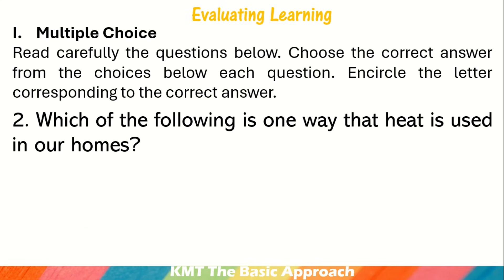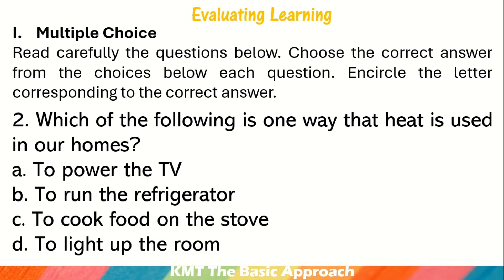Number 2: Which of the following is one way that heat is used in our homes? A. To power the TV. B. To run the refrigerator. C. To cook food on the stove. D. To light up the room. The correct answer is letter C: to cook food on the stove.